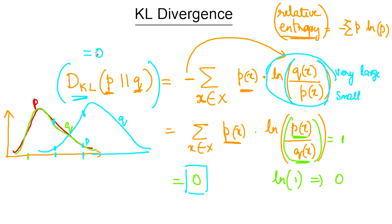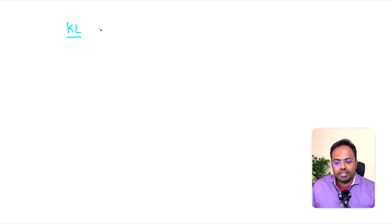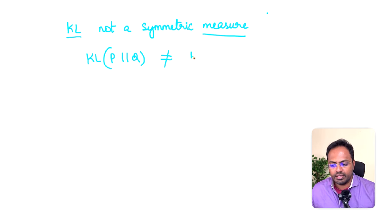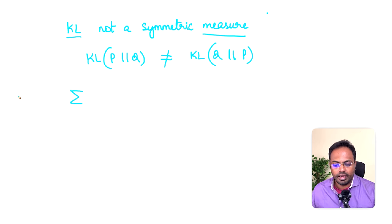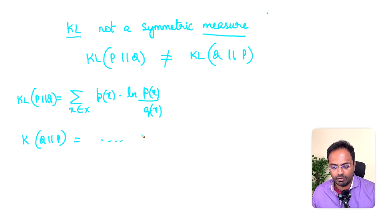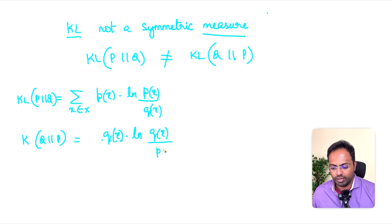So what do we fundamentally understand from this? When the KL divergence value is equal to zero or very close to zero, it means the two distributions being compared are very close to each other. One important property of KL divergence is that it is not a symmetric measure — it is not a statistical metric. The KL divergence of p and q is not the same as the KL divergence of q and p, because by the nature of the formula, swapping p and q changes p(x)·log(p(x)/q(x)) to q(x)·log(q(x)/p(x)), and these are not the same.